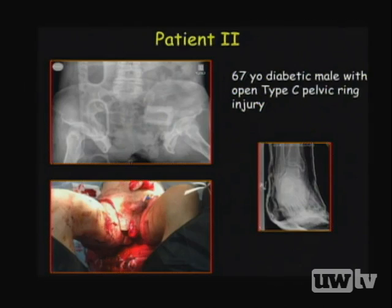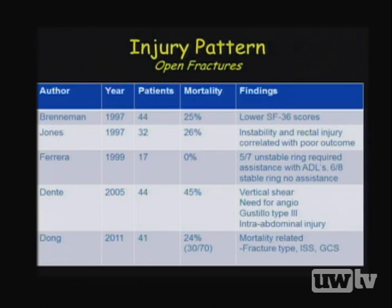Open fractures of the pelvis account for 2 to 4% of all pelvic ring injuries. Acute mortality is related to hemorrhage, while delayed mortality is due to sepsis and multi-organ failure.